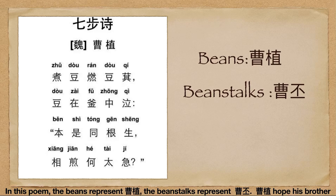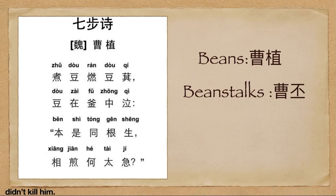In this poem, the beans represent Cao Zhi and the beanstalks represent Cao Pi. Cao Zhi hoped his brother would not kill him.